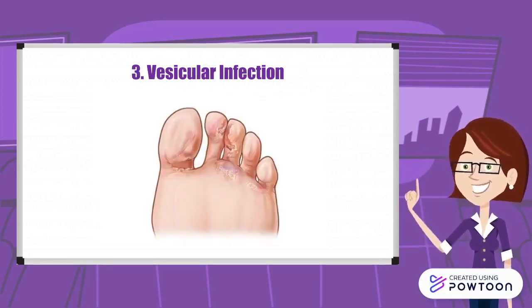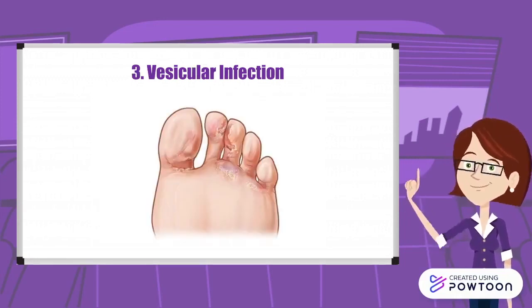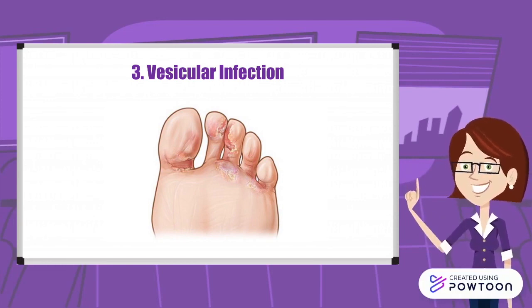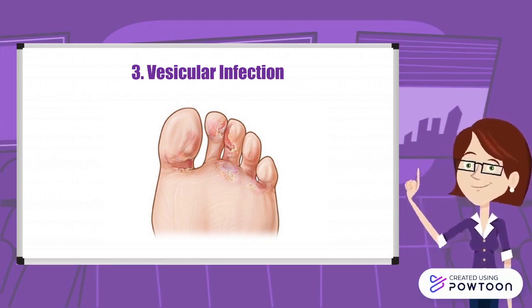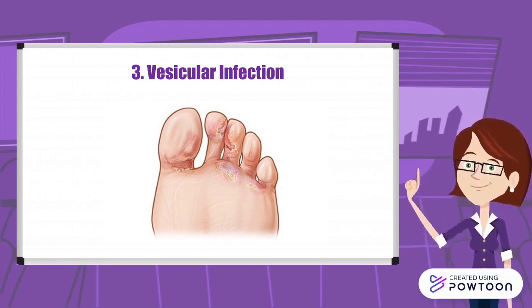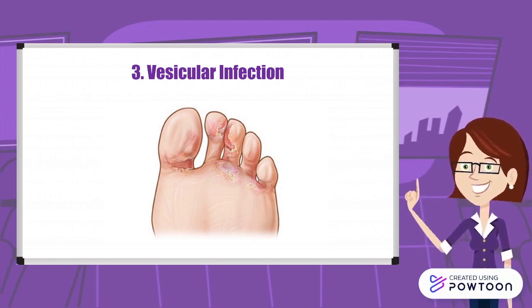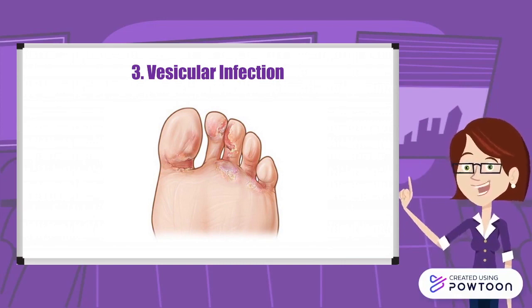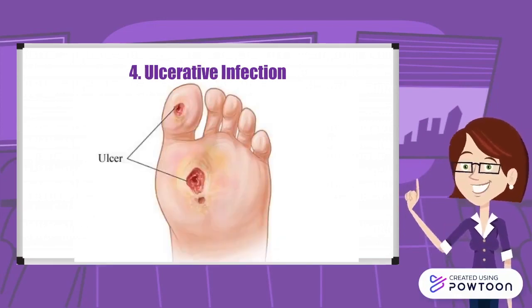Next is vesicular infection. This type of infection is characterized by fluid-filled blisters on the sole or the upper part of the heel. Small red blisters usually pop up on the sole or between the toes. Bacteria can infect any ruptured blister and antibiotics may be needed for this type of infection.